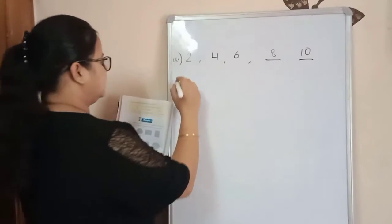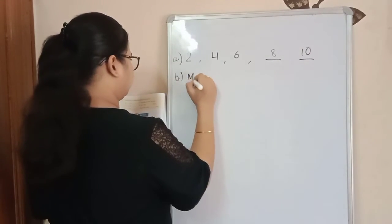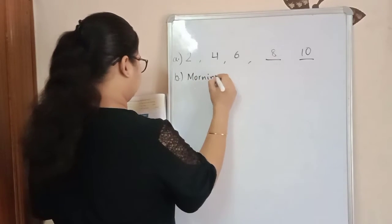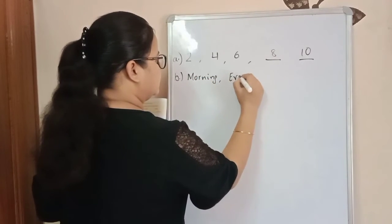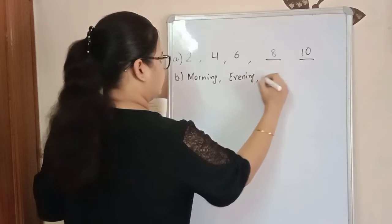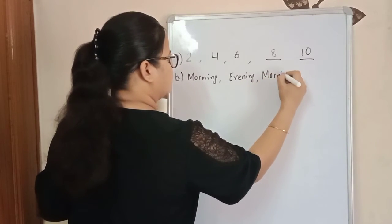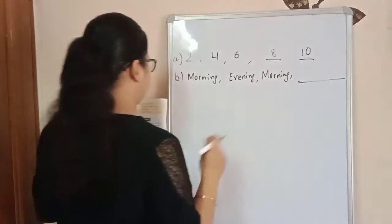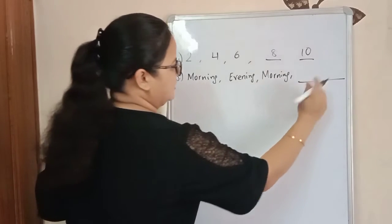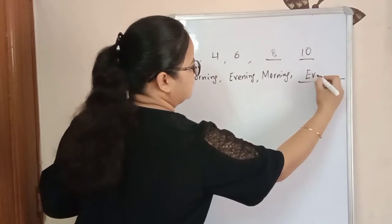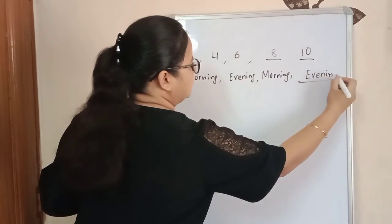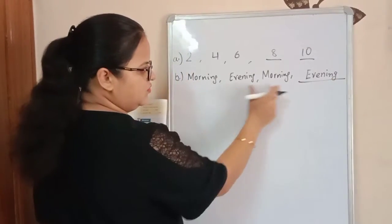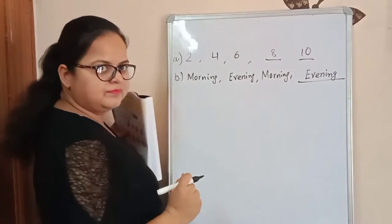Very well done. The next is, see. Morning, evening, morning, evening. And then a blank. Morning, evening, morning, evening. Here we will write evening. Morning, evening, morning, evening. Done.